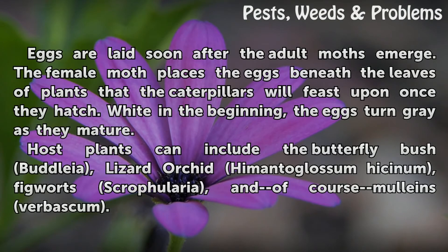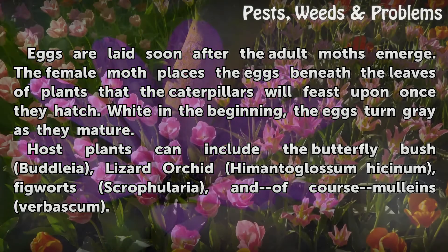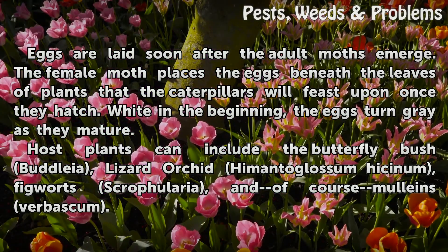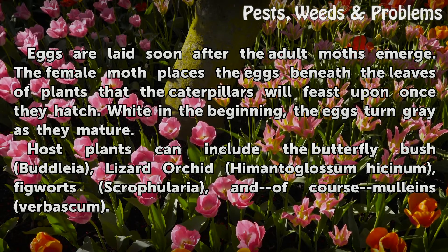Eggs are laid soon after the adult moths emerge. The female moth places the eggs beneath the leaves of plants that the caterpillars will feast upon once they hatch. White in the beginning, the eggs turn grey as they mature. Host plants can include the butterfly bush buddleia, lizard orchid Himantoglossum hircinum, figwort Scrophularia, and of course mullein Verbascum.